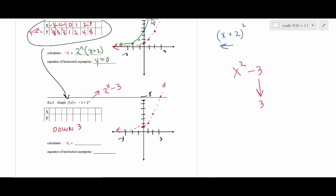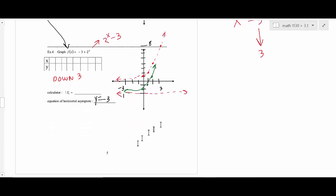When everything shifts down three, the horizontal asymptote also moves down to y equals negative three. So put the asymptote at y equals negative three and move all the points down. For instance, y = 4 becomes y = 1. The rule is: if it's inside the function it plays with x; if it's outside it changes y.